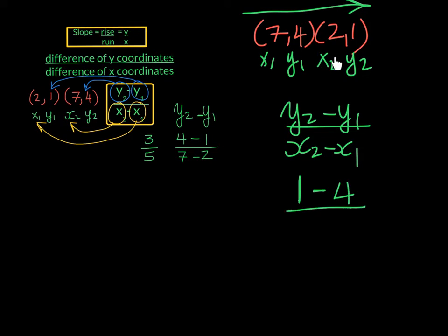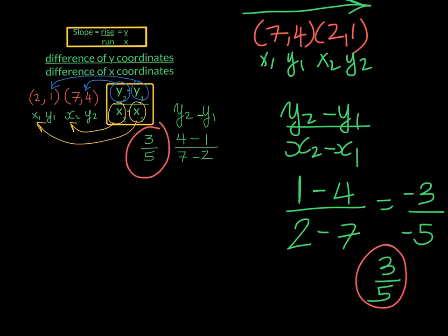In the denominator, my x2 is 2. And I will subtract from it the x1, which is 7. So in the numerator, if I have 1 but take away 4, I owe 3. And if I have 2 and owe 7 in the denominator, I owe 5. When we divide 2 negative numbers, we get a positive number, and we see that the slope is 3 fifths, as it was when the points were ordered the other way around. It does not make a difference.